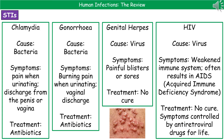Here are four common sexually transmitted infections. Chlamydia is a bacterial STI; symptoms include pain when urinating and a discharge from the penis or vagina, and it's treated with a course of antibiotics. Gonorrhea is also a bacterial infection; it causes a burning pain when urinating and vaginal discharge, and is again treated with antibiotics.